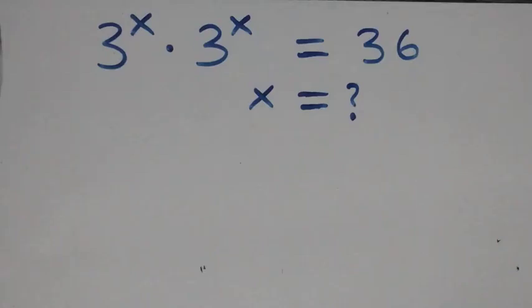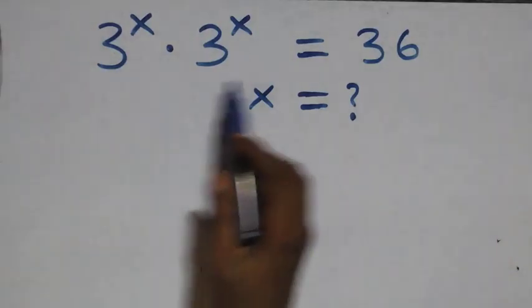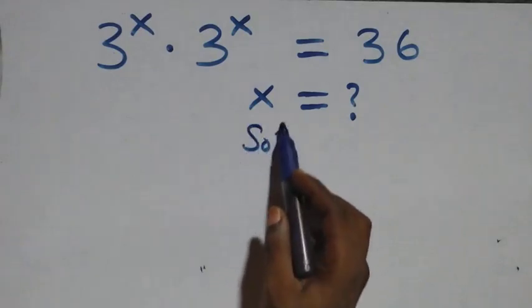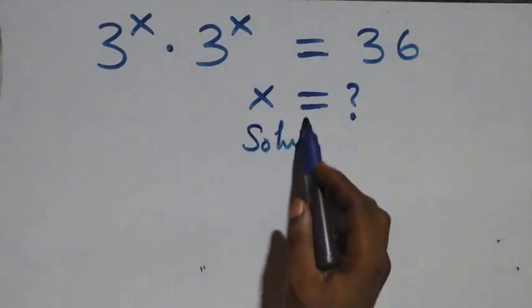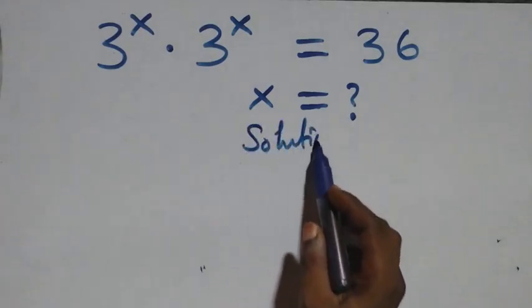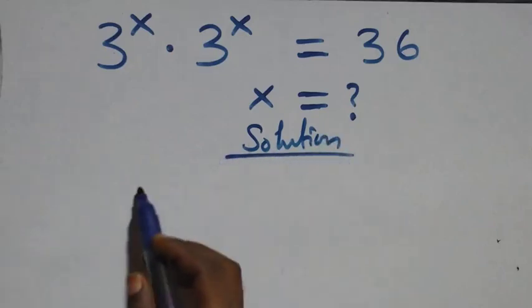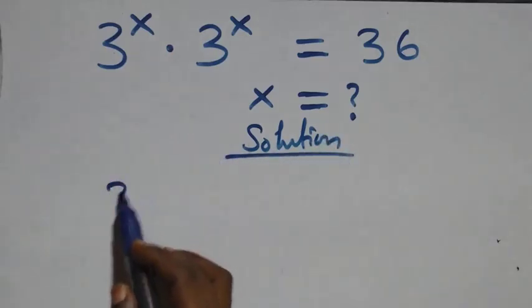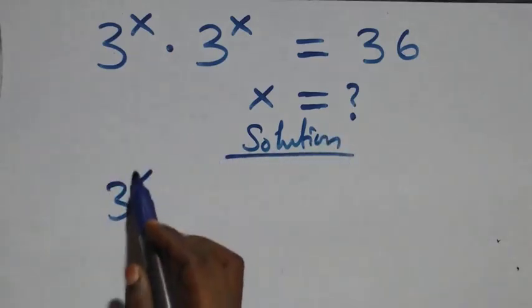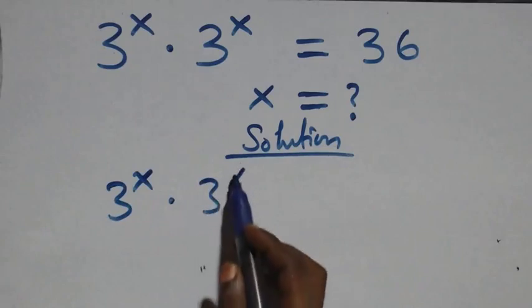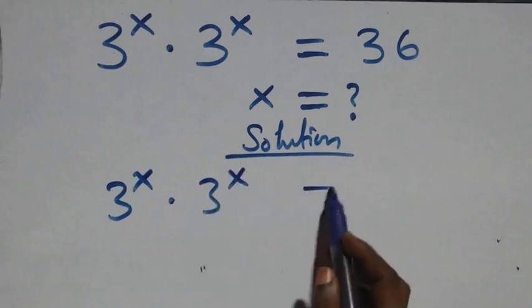Hello, you are welcome. How to solve this nice exponential equation. What we have here is two raised to power x, times two raised to power x, equals to 36.